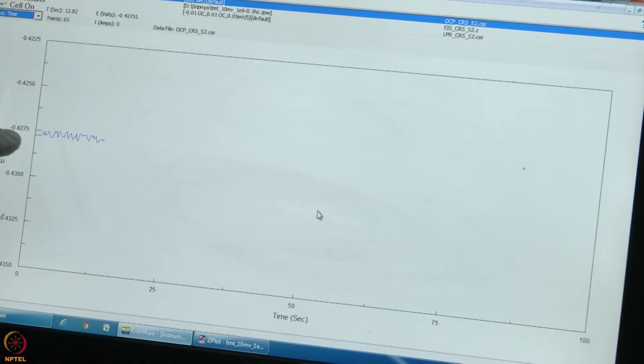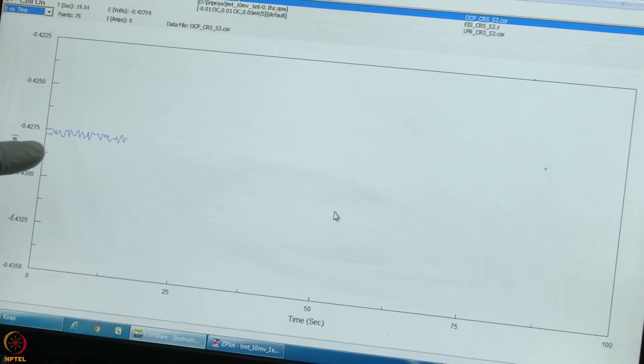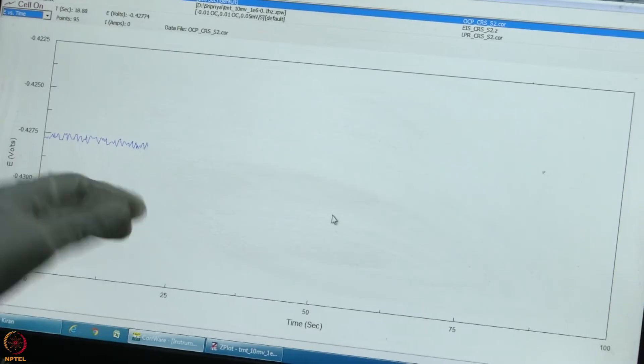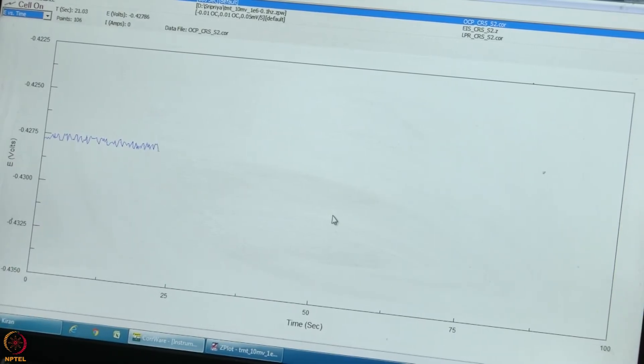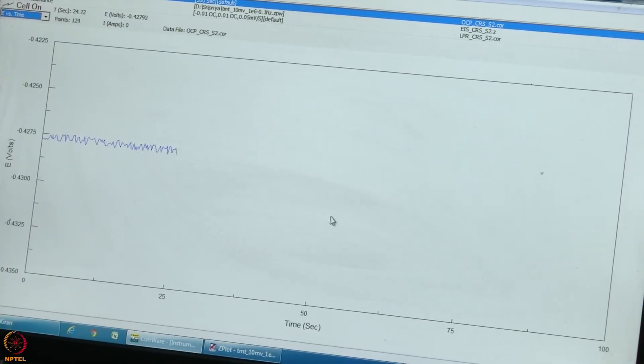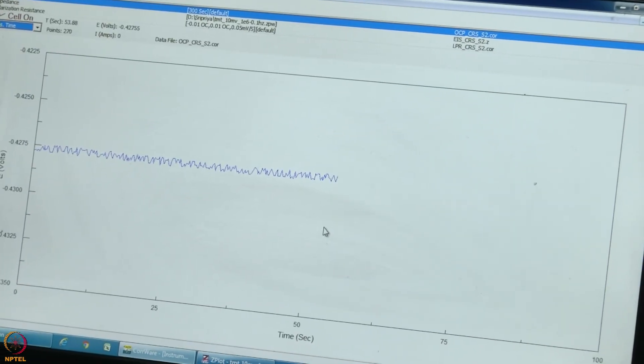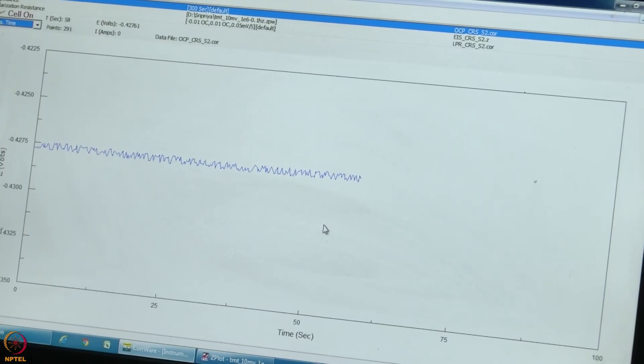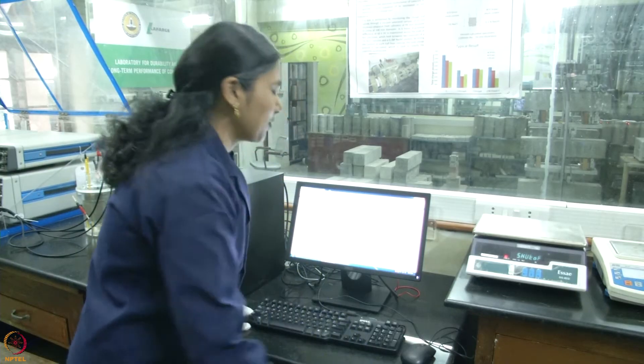If you can see there are four digits in this. It is more or less very stable. When you have a stable OCP, our measurements will get better in LPR and EIS measurements. Now, the experiment is over.